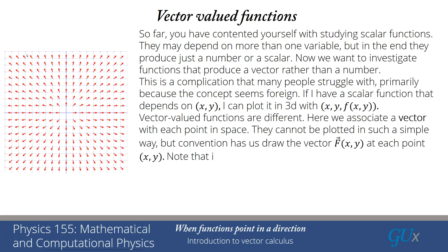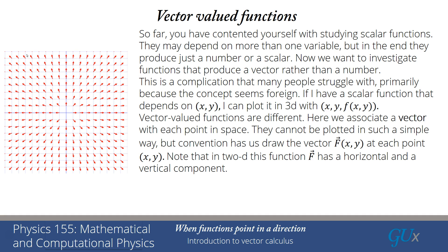That's shown for a particular vector function on the left-hand side. The function f is a vector, which means it has a horizontal component and a vertical component. If you like to relate this back to scalar functions, you can think of it as a scalar function multiplied by the unit vector in the x direction plus a scalar function multiplied by a unit vector in the y direction. Those two scalar functions need not be exactly the same, and that's how you determine the vector.